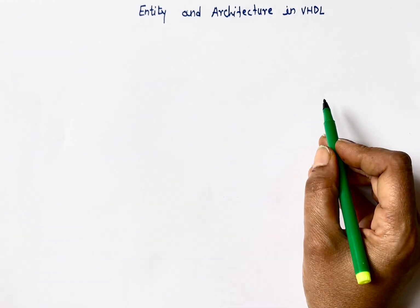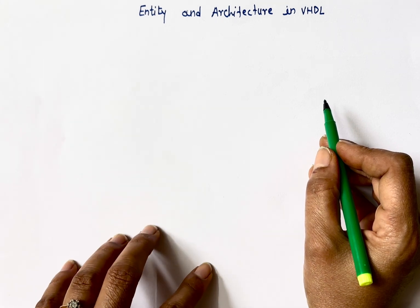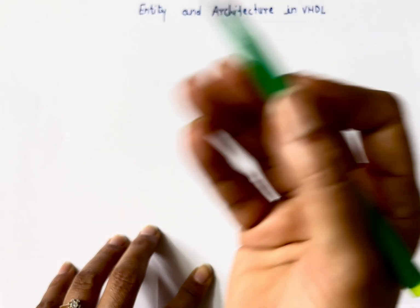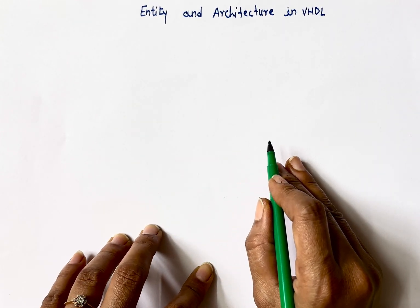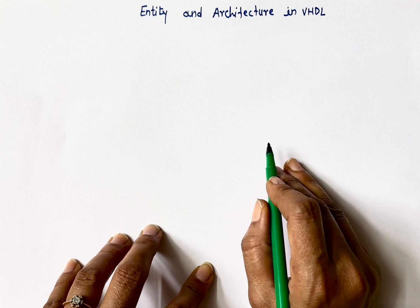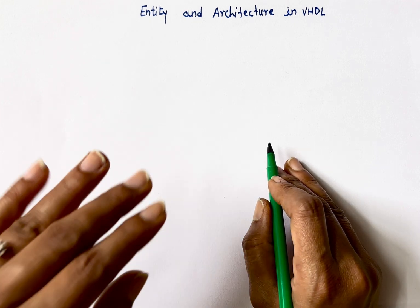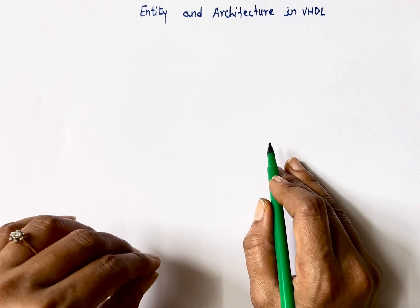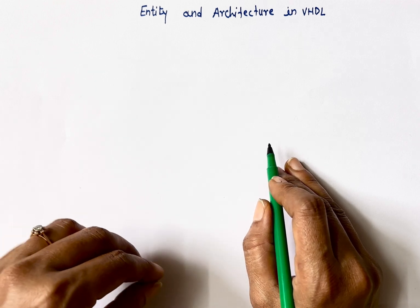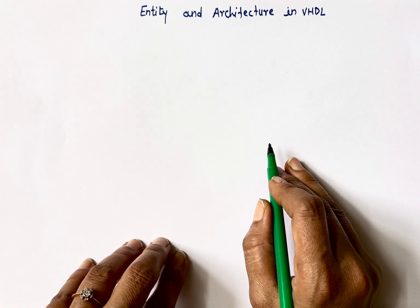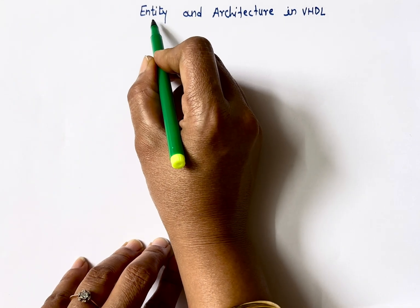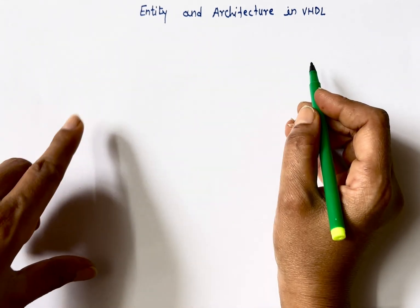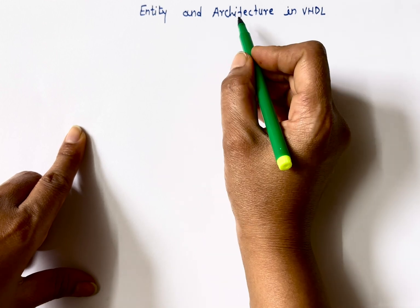What happens inside the controller when you press the buttons — that entity doesn't tell us; architecture tells us. In technical terms, entity is a block in VHDL which is used to declare all the input and output ports. The externally available inputs and outputs we declare in entity, and architecture is where we write what happens inside our system.